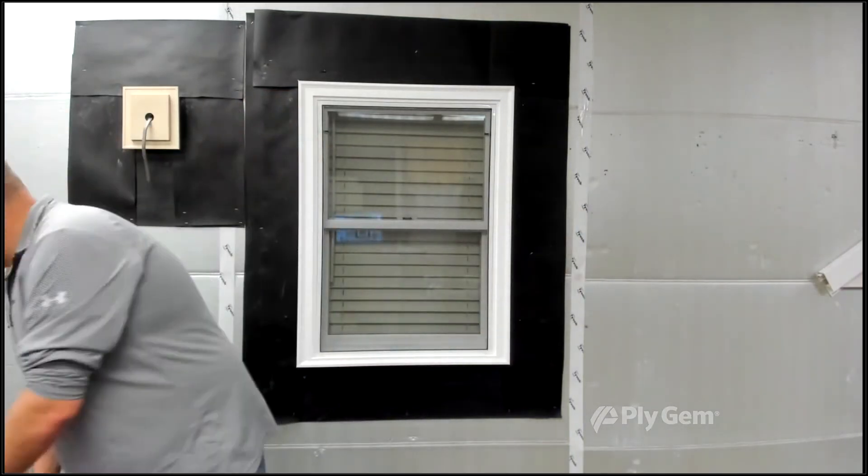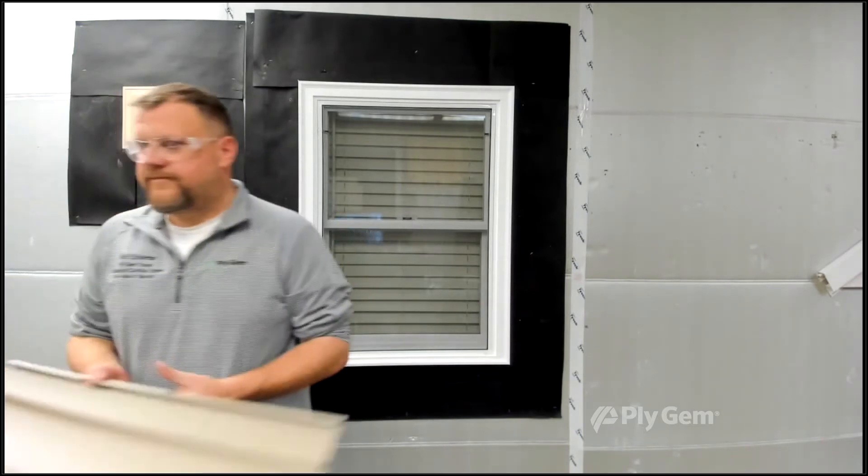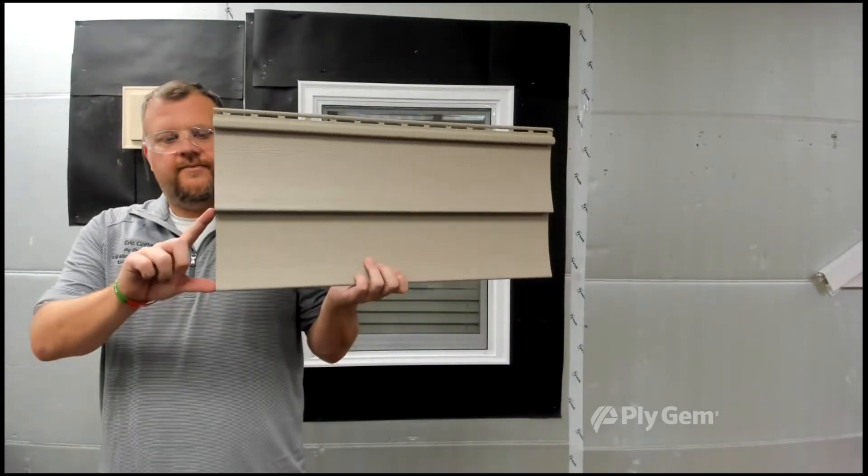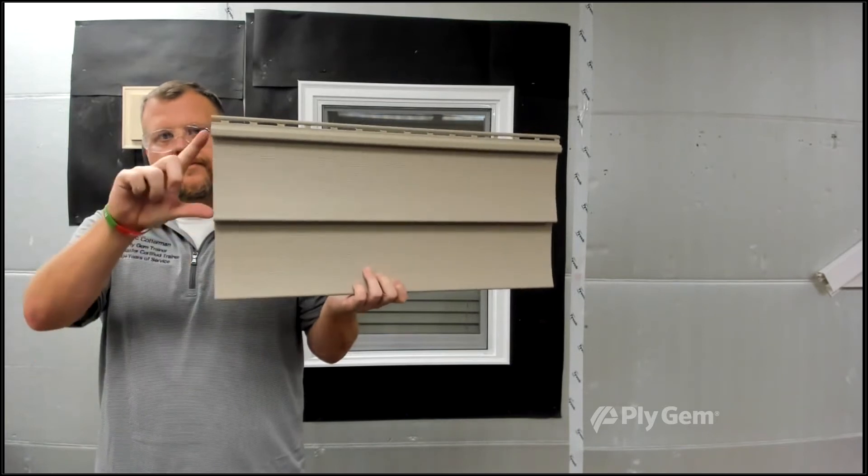So we want to show you another one. He may keep that double four up there. We're going to show you a double five - it's just a wider panel. Some people want that on bigger houses, so he's showing you that now.